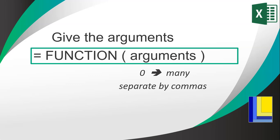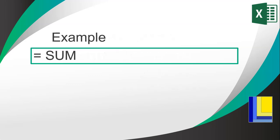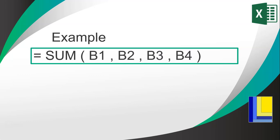Let's take an example quickly where we look at SUM. There's a function called SUM which will add up all the arguments you give it and return one answer. So we write SUM, give it its brackets, and inside we give the arguments. Let's say we want to add up the values in B1, B2, B3, and B4 — we write down the different cell values separated by commas.